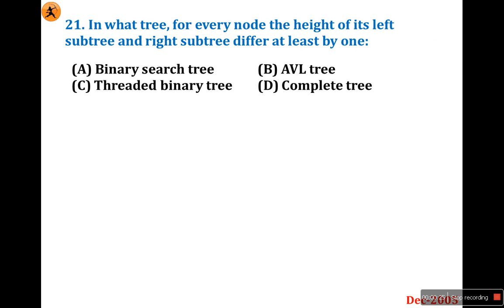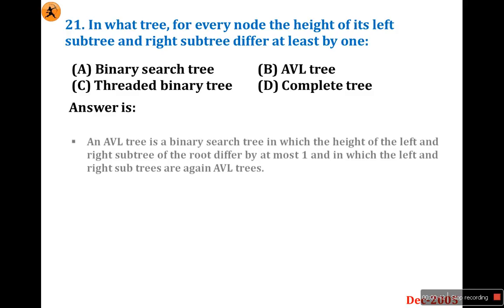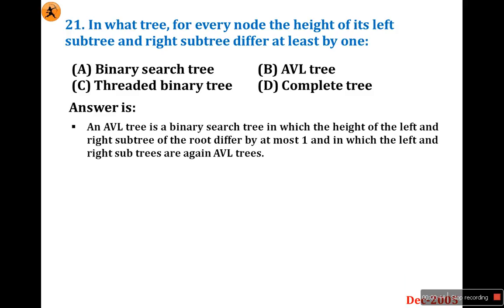Look at question number 21: In what tree, for every node, the height of its left subtree and right subtree differs at most by one? Options are binary search tree, AVL tree, threaded binary tree, and complete tree. First, look at all the definitions. An AVL tree is a binary tree in which the height of the left and right subtree of the root differs at most one.